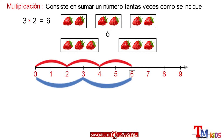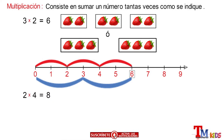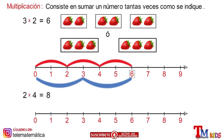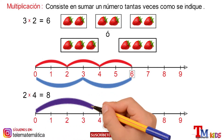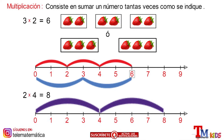Let's see another example: 2 multiplied by 4, which is equal to 8. We will represent 4 times 2. From 0 in the semicircle, we give a first jump of 4 units and a second jump of 4 units, and we reach the value 8, which is the result of the multiplication.